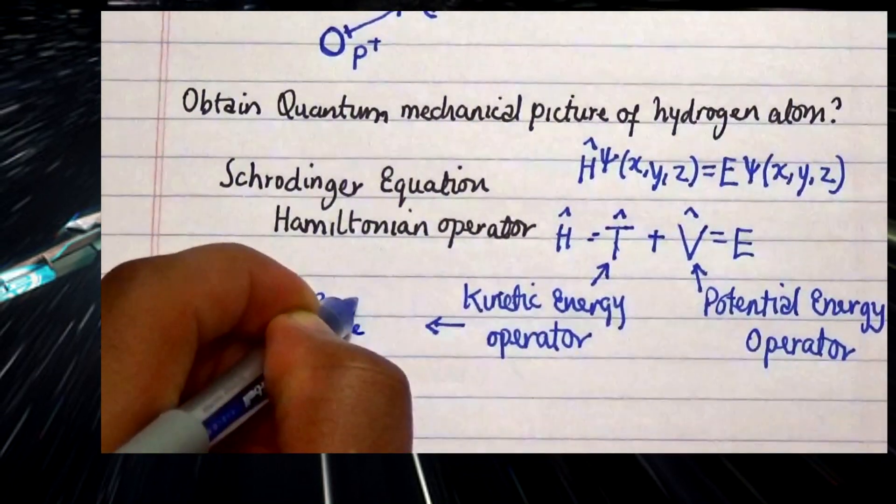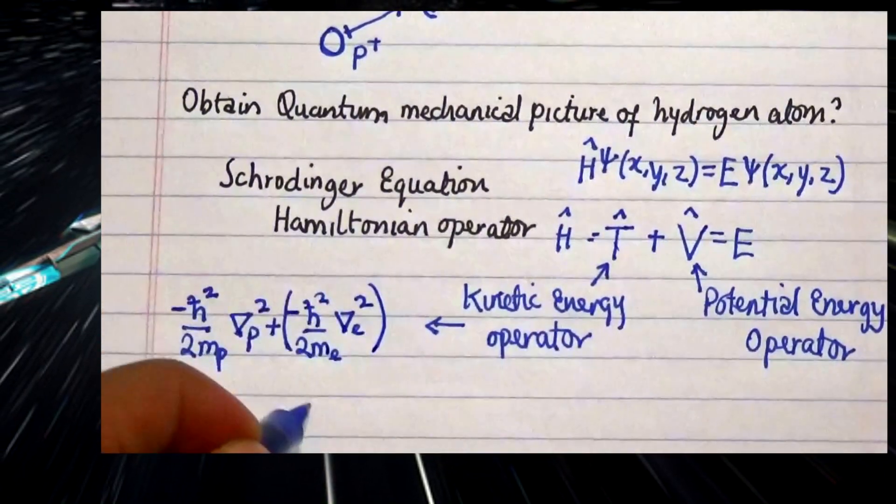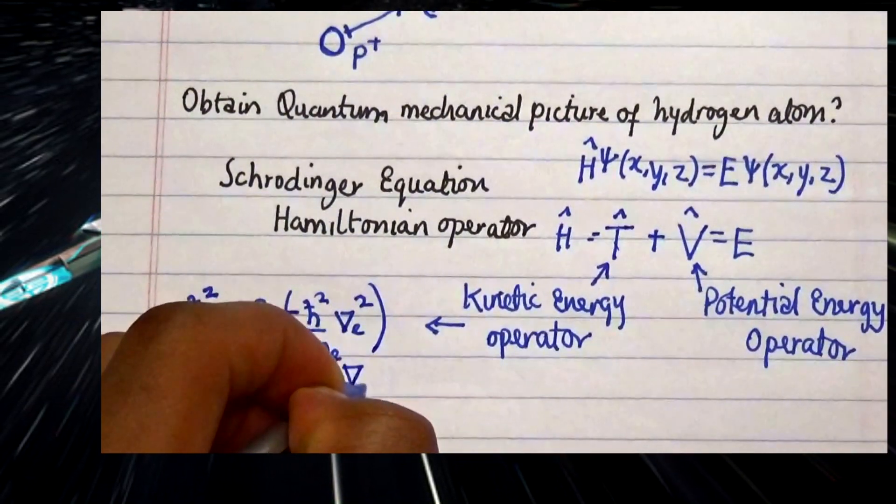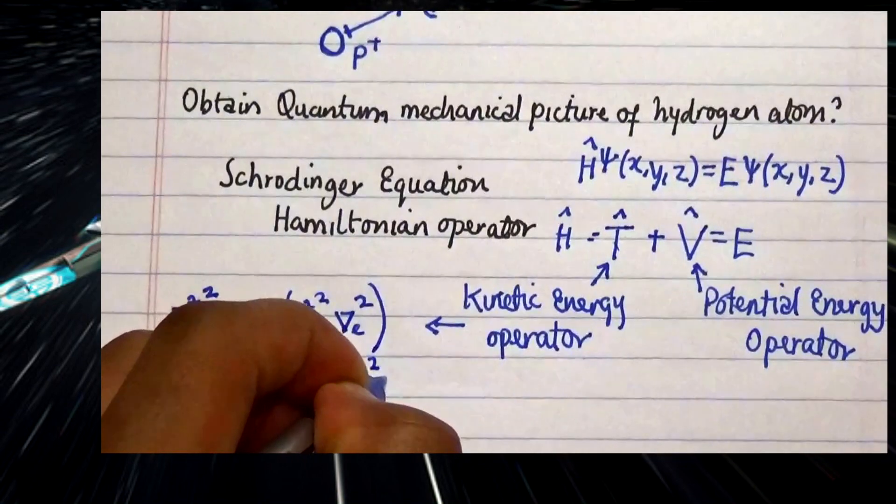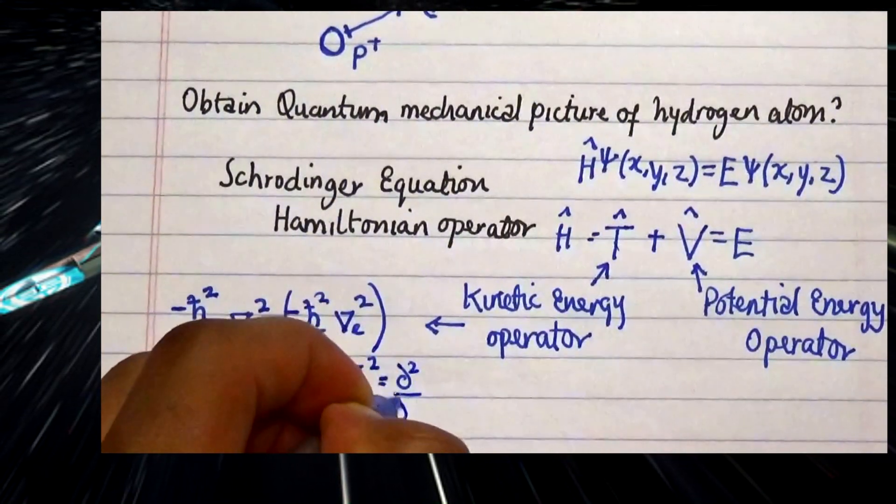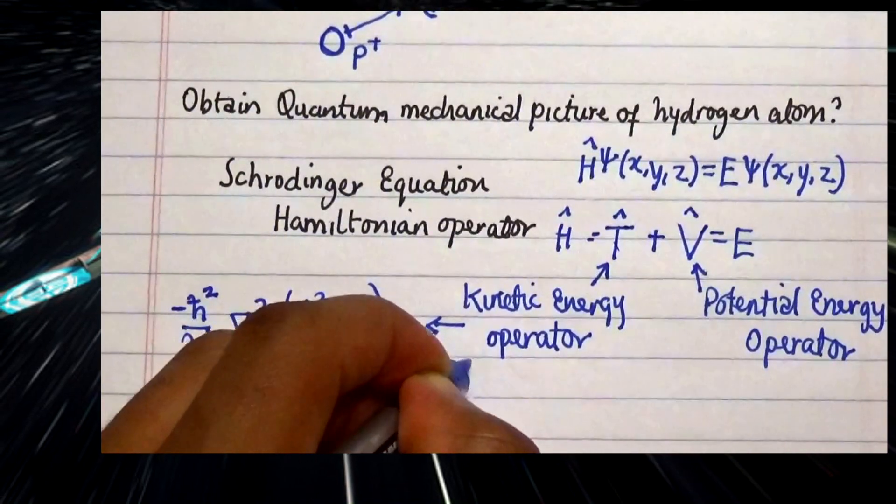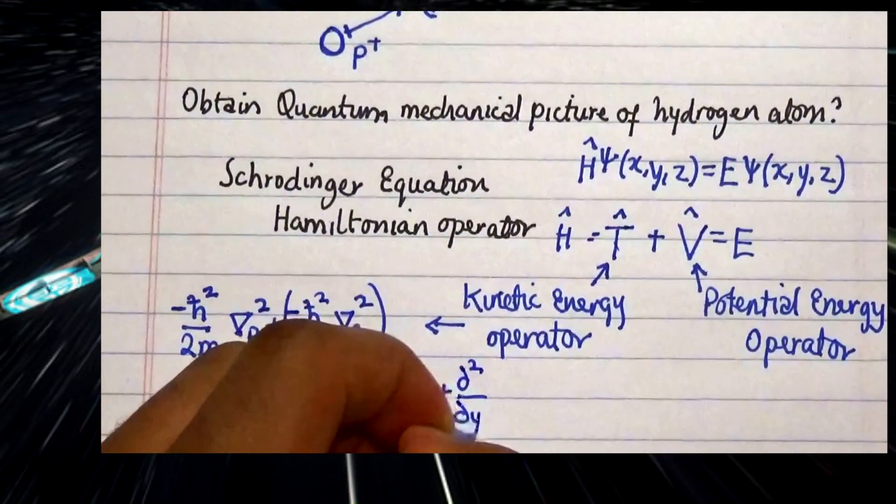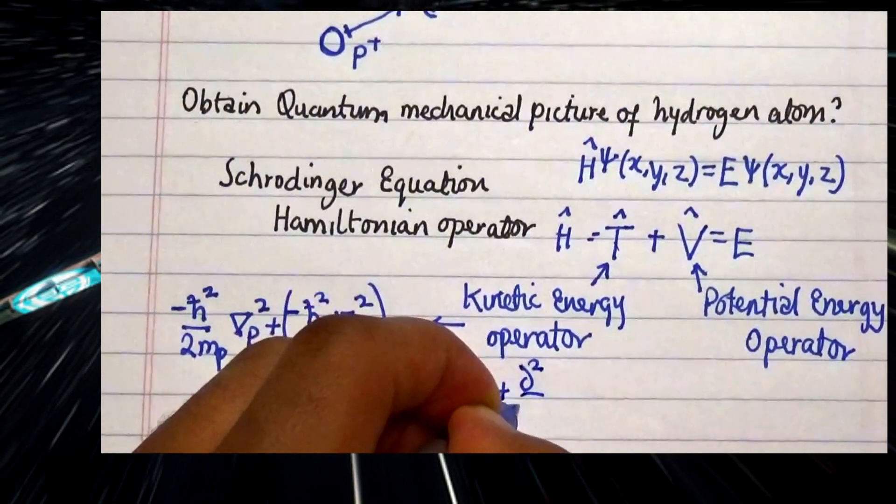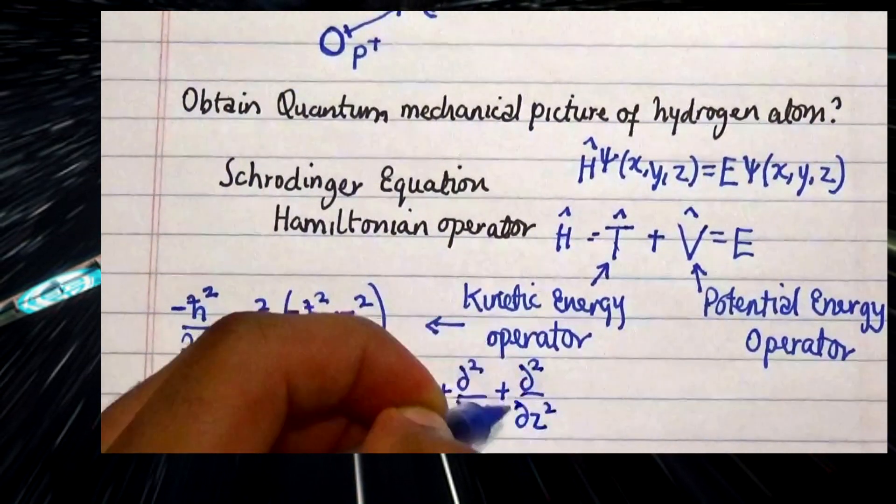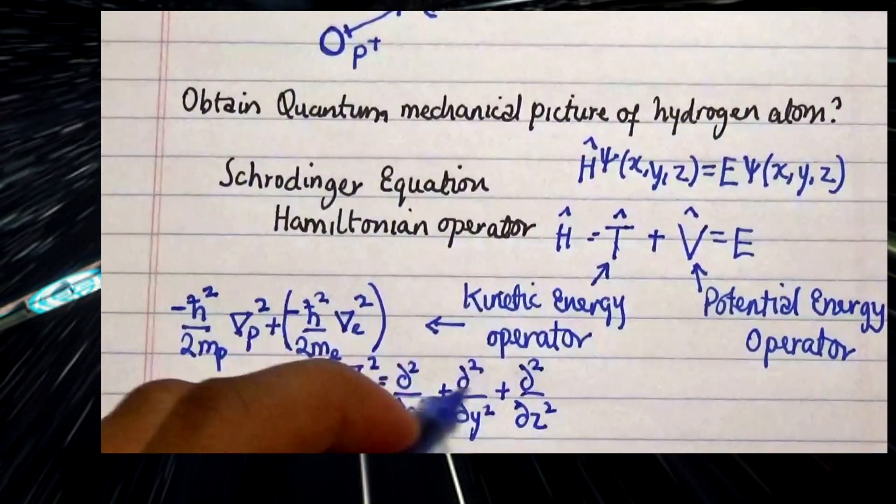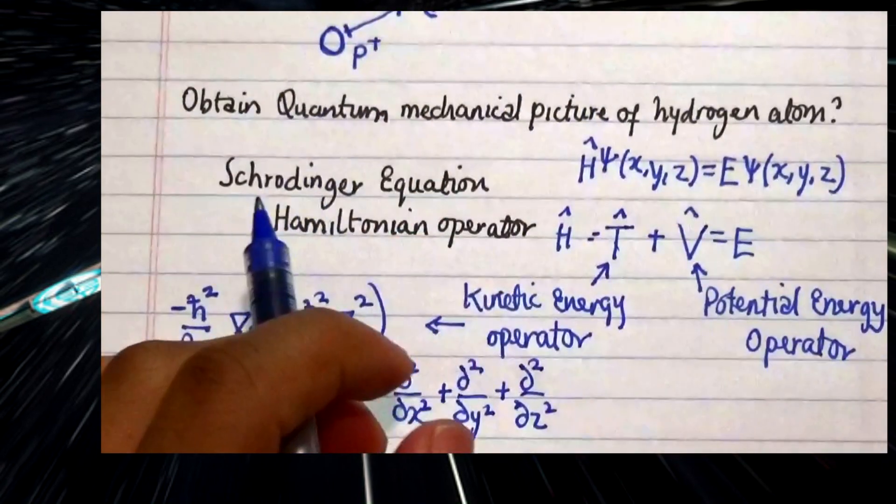Our Laplacian is actually expressed as d squared over dx squared plus d squared over dy squared plus d squared over dz squared. We are not including the time coordinates because time is an independent variable in this particular situation.